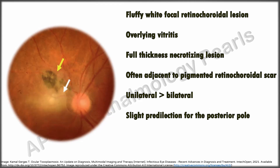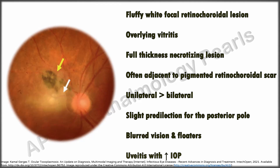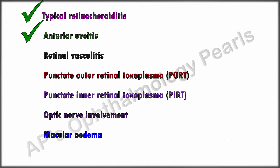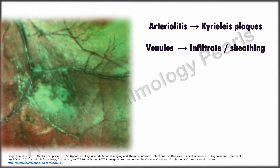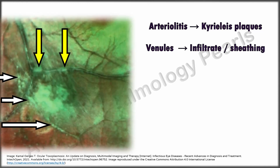The lesion due to acquired disease is more often unilateral, in contrast to congenital toxoplasmosis, and has a slight predilection for the posterior pole. The patient presents with blurred vision and floaters, accompanied by non-granulomatous or granulomatous uveitis with a frequent incidence of significantly raised IOP. Atypical features include retinal vasculitis with arteriolitis showing segmental peri-arterial plaques in a beaded pattern, called Kyrieleis plaques, and venular involvement with peri-venular infiltrates and sheathing.